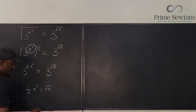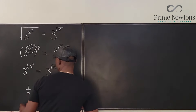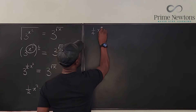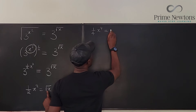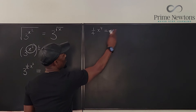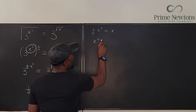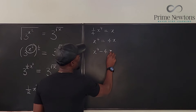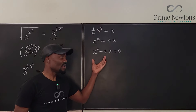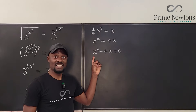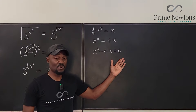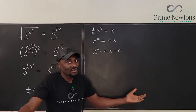We can square both sides to get rid of the square root. Squaring both sides gives us one-quarter x⁴ equals x. Cross-multiplying gives x⁴ equals 4x, and then x⁴ minus 4x equals zero. This is a quartic polynomial, and a quartic equation is supposed to have four solutions.